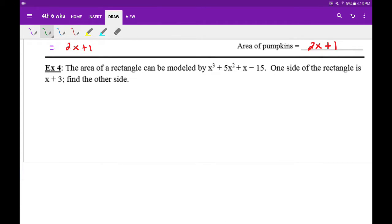Example four is an example where we're going to have to divide our polynomials. So we have a rectangle with the area of x cubed plus 5x squared plus x minus 15. And then they give us one side of the rectangle as x plus 3. So find the other side.